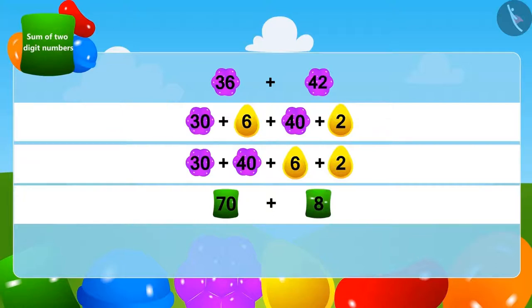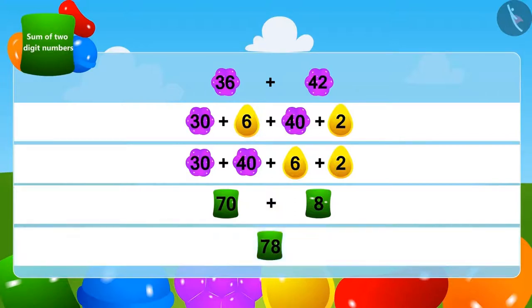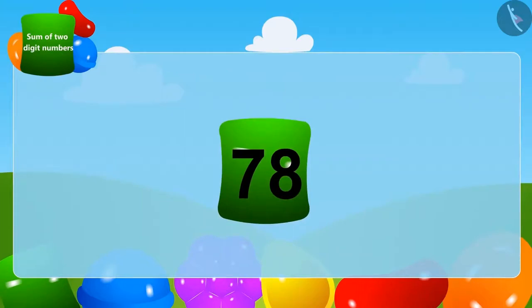Lastly, we will add 8 to 70 and get 78. Yes, the crow has collected a total of 78 stones.